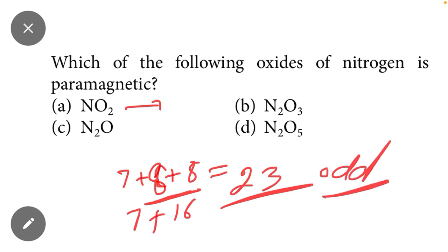And 23 is an odd value, which means NO2 will be the paramagnetic species. In this way you can easily identify which one is paramagnetic and which one is diamagnetic.